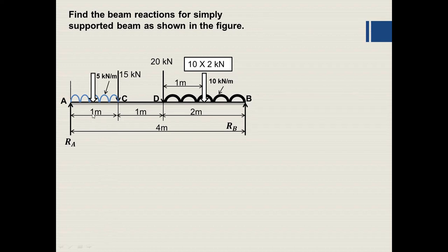Similarly, the second UDL of 5 kilonewton per meter acting over 1 meter length gives an equivalent point load of 5 into 1, which is 5 kilonewton, acting at the center of 1 meter — that is 0.5 meter from its start. Using these converted values along with the existing point loads, we can find the beam reactions.